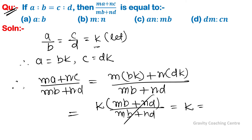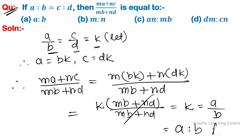Since k = a/b = c/d, we write the result as a upon b. Therefore, the answer is a ratio b, and option A is the correct answer.